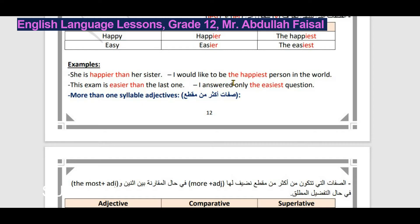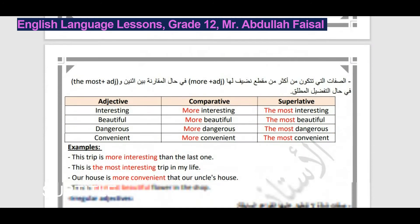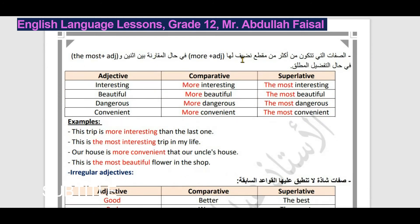ننتقل إلى الصفات الأكثر من مقطع، أي فيها أكثر من حرف صوتي - more than one syllable. مثلاً: interesting فيها أربعة مقاطع، beautiful فيها ثلاثة مقاطع، dangerous وكذلك convenient. إذا كانت الصفة أكثر من مقطع وبين اثنين نضيف more قبل الصفة.